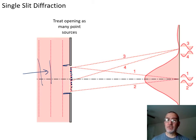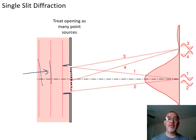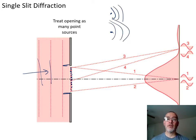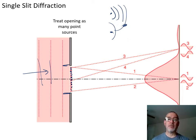We kind of used this with double-slit. When light went through the double-slit, the opening of the slit acts like a point source. What we got were waves that came out and interfered with one another, and so we got the brights and the darks. I'm not going to rehash that, but just remember that's what we had.